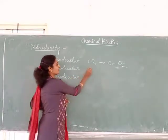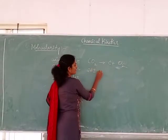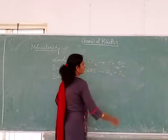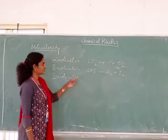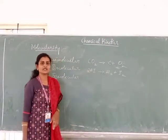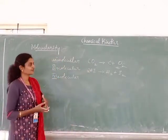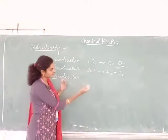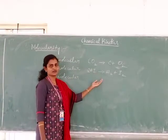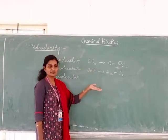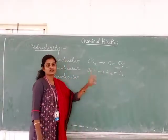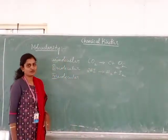You can also take the decomposition of hydrogen iodide to produce hydrogen and iodine. Here you can observe there are 2 molecules involved in the reaction. If you consider it from right to left as well, it is called bimolecular only, because from both directions 2 molecules are involved.